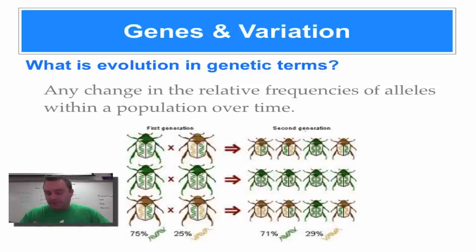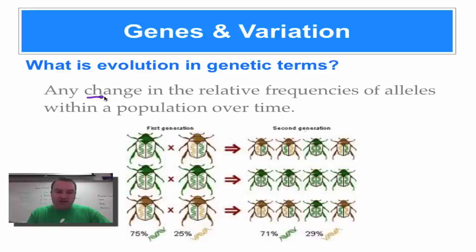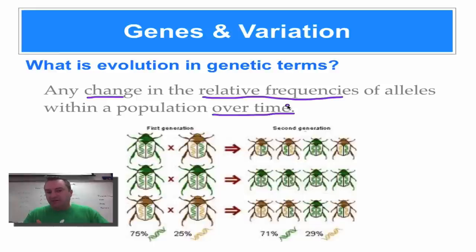Previously when we were dealing with Darwin's theory, we simply said that evolution is defined as a change in species over time. In the previous episode we talked about allele frequency, so we're going to incorporate allele frequency into our definition. From here on out, evolution will be defined as any change in the relative frequencies of alleles in a population over time — a change in allele frequencies from generation to generation.